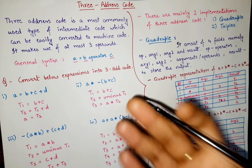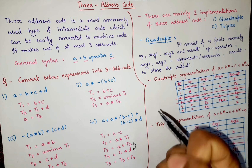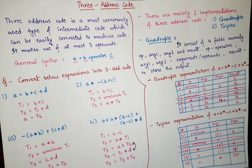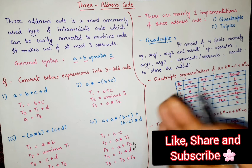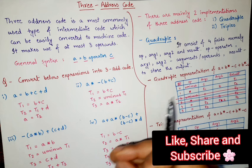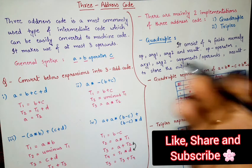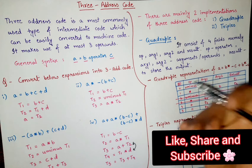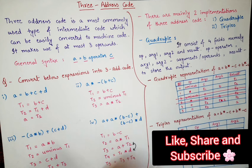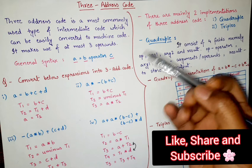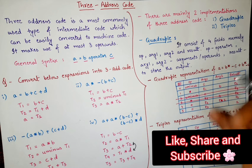We have almost covered all the important topics of compiler, but there are a couple of things that students wanted to know in more detail. 3 address code is one of those topics, and it is very important in exams — sometimes asked as a 4 mark, 6 mark, or even 8 or 10 mark question. In this video we will understand what is 3 address code with a standard definition, see the general syntax, go through examples, and look at the two main implementations: quadruple and triple.